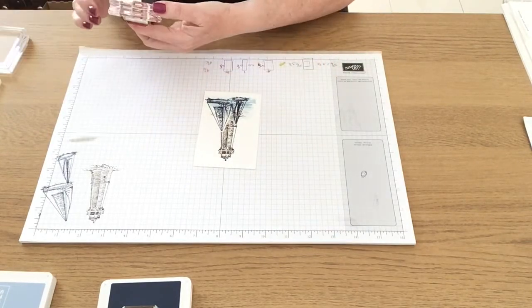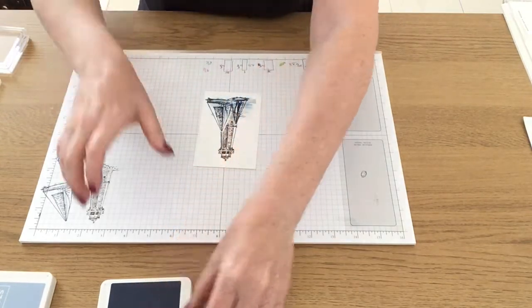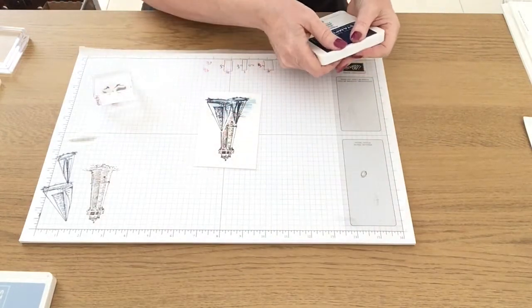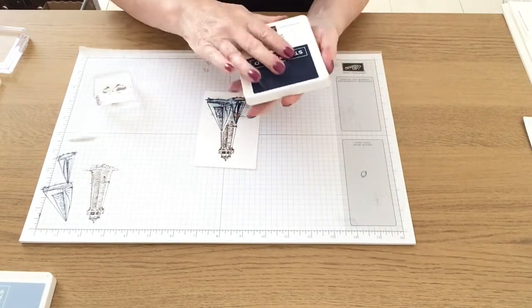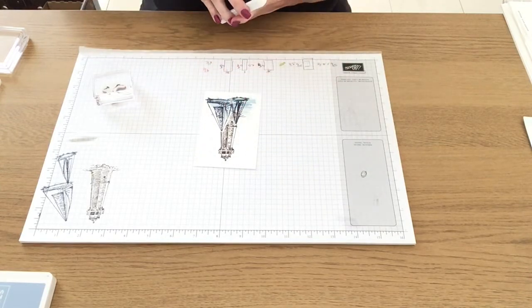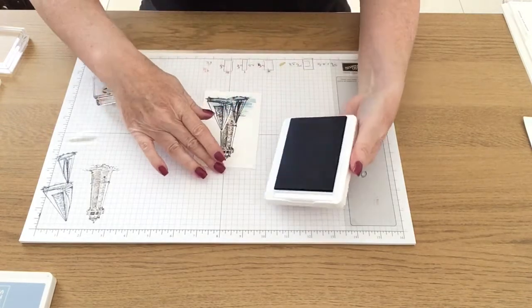So now I'm just going to load up the little birds onto a small block and again in Knight of Navy, I'm going to stamp them just at the top of this piece of white card.